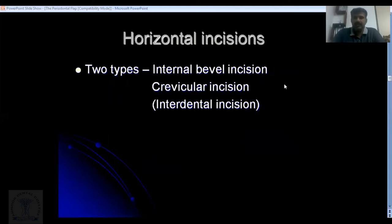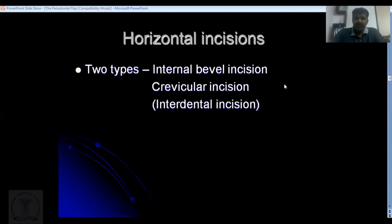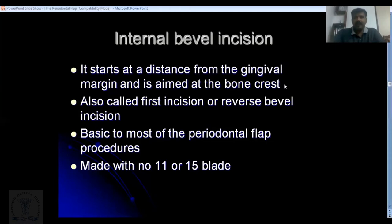The three types of horizontal incisions are: the internal bevel incision, the crevicular incision, and the interdental incision. The internal bevel incision starts from the gingival margin and is aimed at the bone crest. It is also known as the first incision and is basic to most periodontal flap procedures. It is made with a number 11 or number 15 blade.